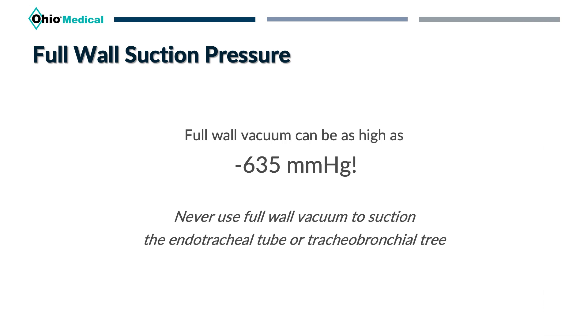In my experience, suction pressure is seldom even a consideration when suctioning a patient. Many times a suction canister will have more than one device wired into the suction regulator, and more often than not the oral Yankauer suction is on the same regulator as the inline suction catheter. While that might make practical sense, an oral suction can be used with full wall maximum suction pressure because the inside of the mouth has rigid, robust tissue accustomed to wear and tear. A suction catheter designed for artificial airway suctioning should never be placed on full wall suction pressure because that tissue is not robust. Full wall vacuum can actually be as high as negative 635 millimeters of mercury — we should never use full wall vacuum pressure to suction an artificial airway.